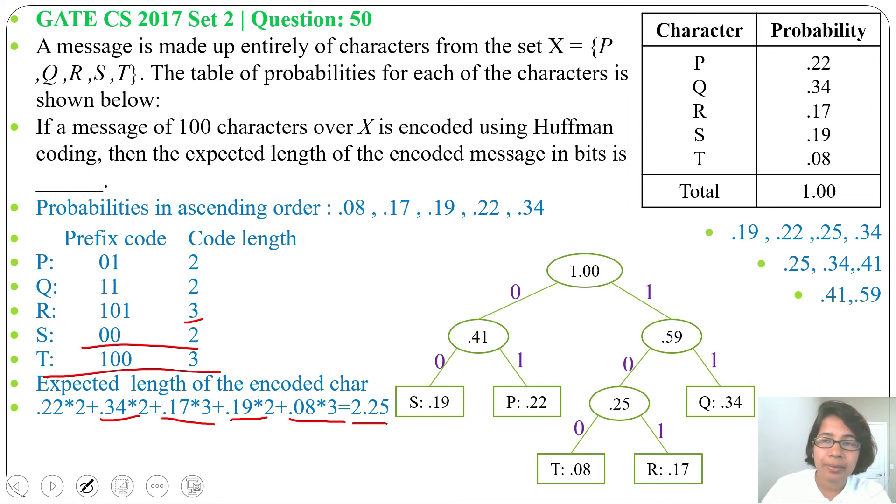Now we need to find for 100 characters. So simply we will multiply 100 with 2.25. That is 225. So the answer will be 225.